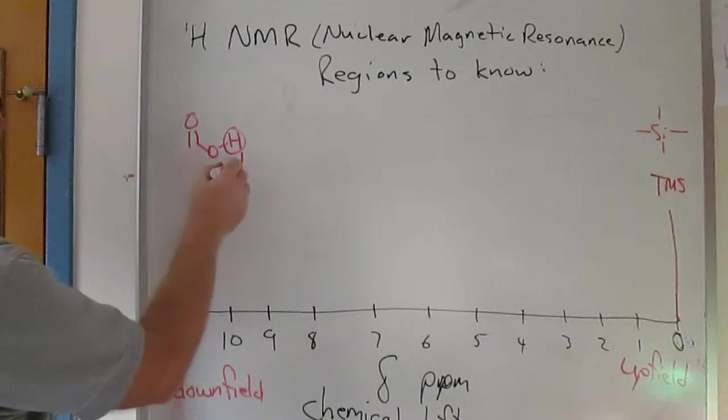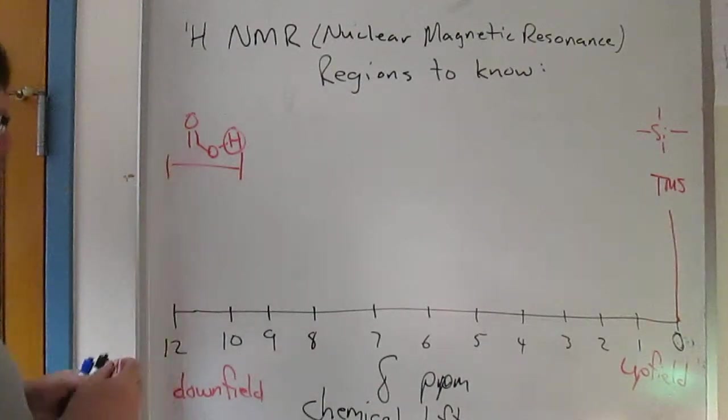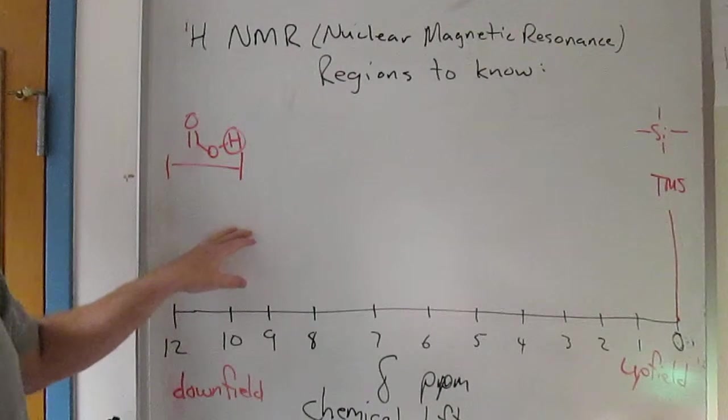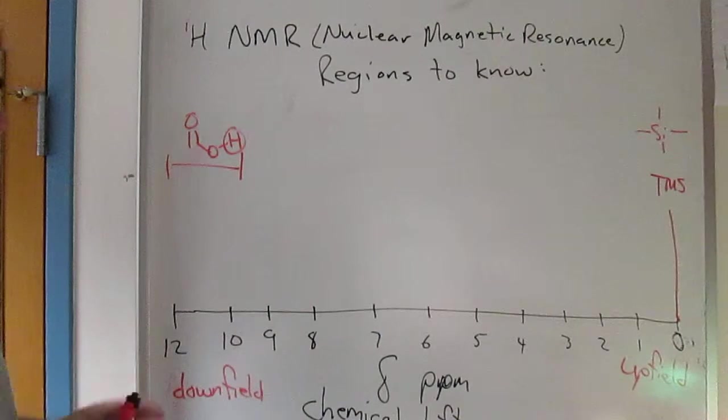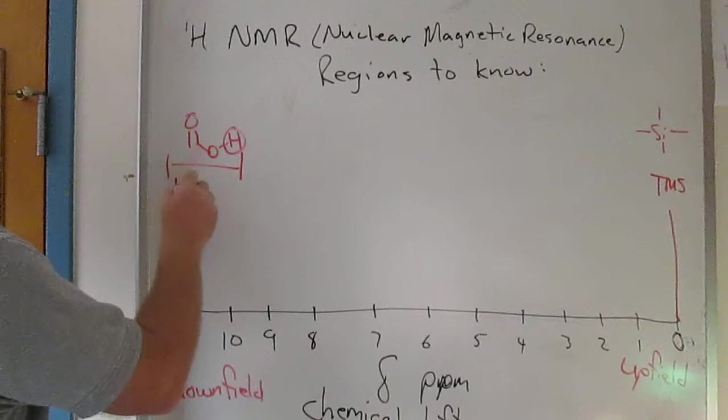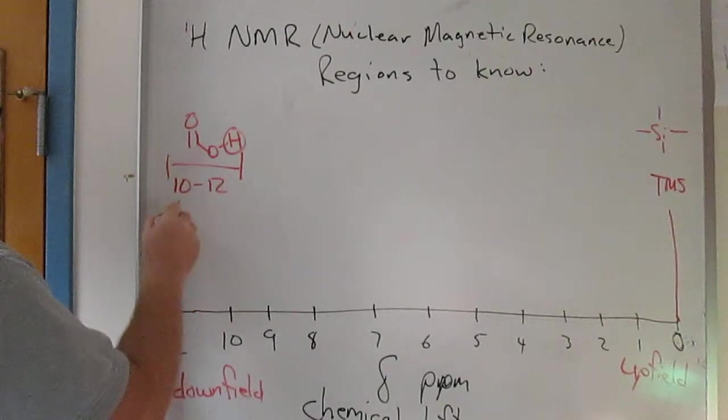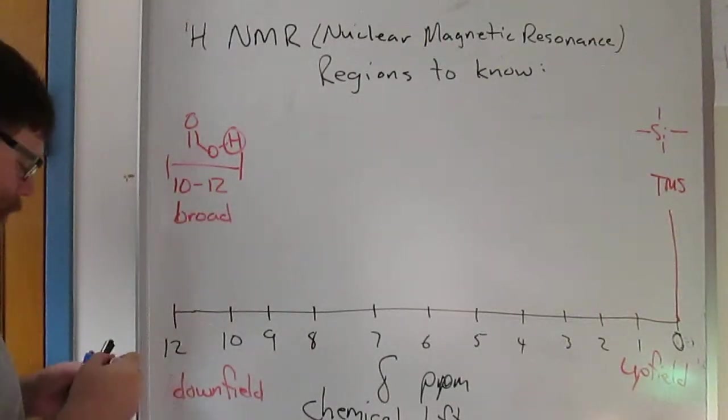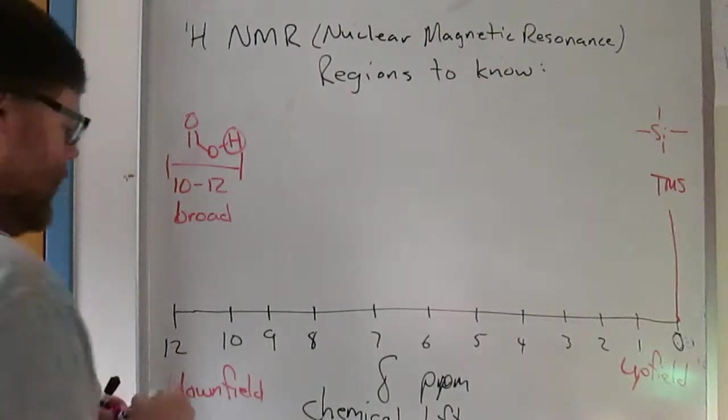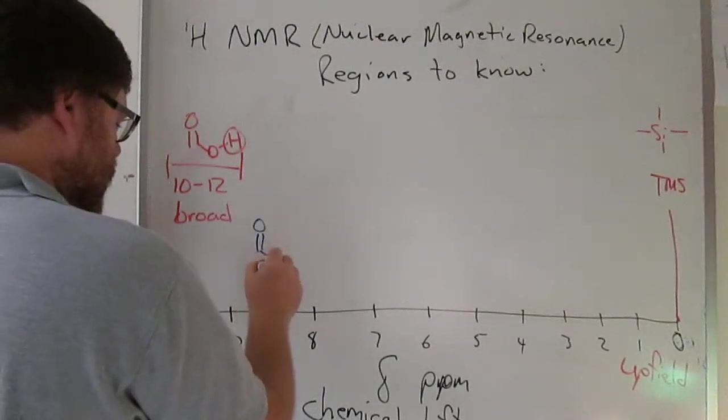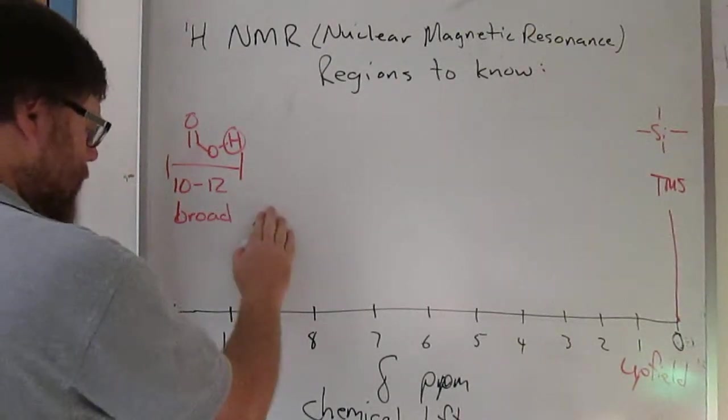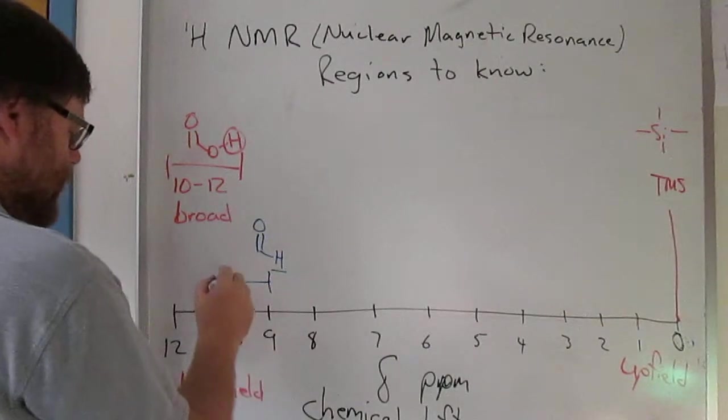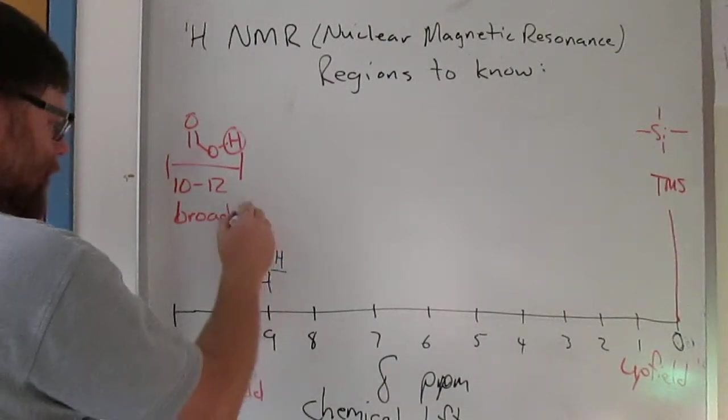This is proton NMR, so the only signals we're going to see in the spectrum will be from protons. Carboxylic acid protons tend to come from about 10 to 12, and they tend to be very broad. Aldehyde protons - a proton bonded directly to a carbonyl - tend to come from about 9 to 10 and be sharp.